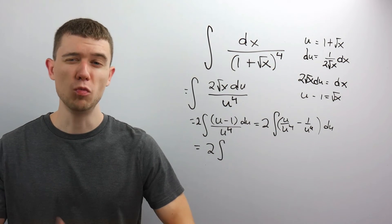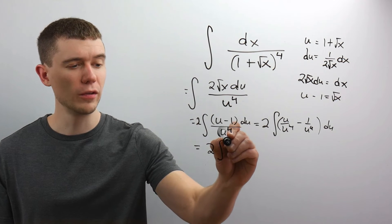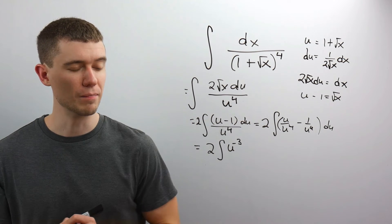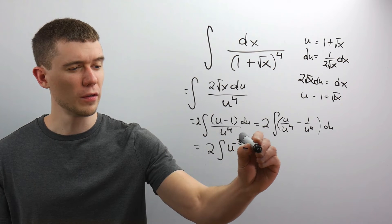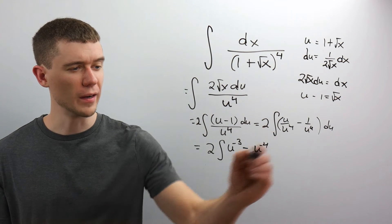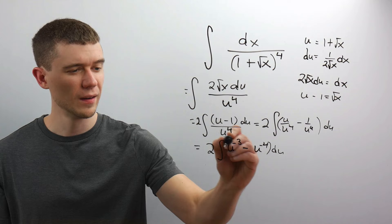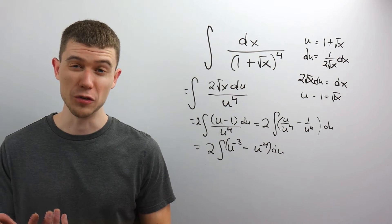u over u to the 4th, that would be 1 over u cubed. Equivalently, you could write that as u to the minus 3. 1 over u to the 4th, that's u to the minus 4. And now we're all ready to do our antiderivative.